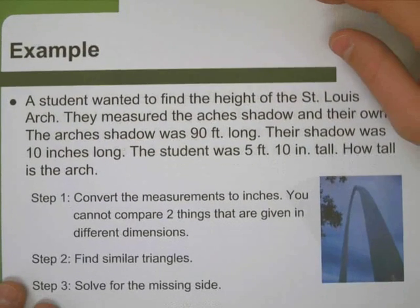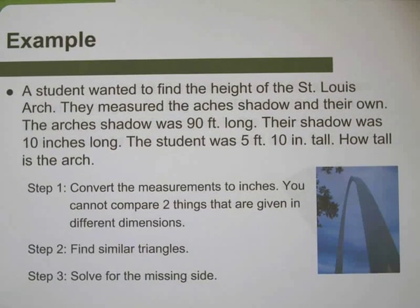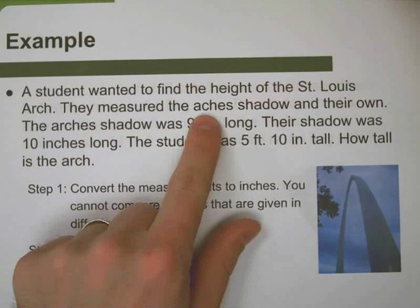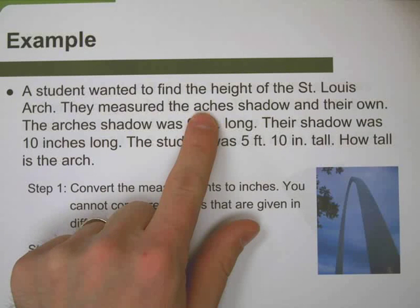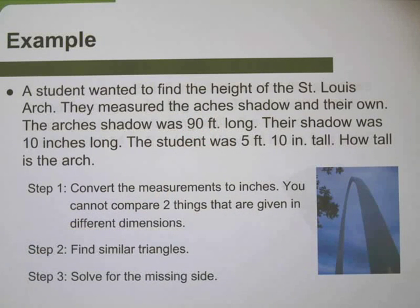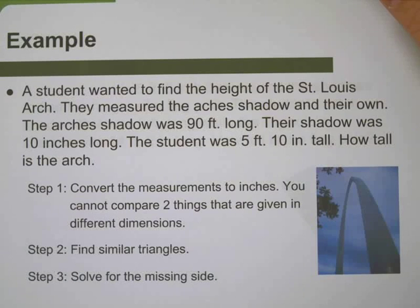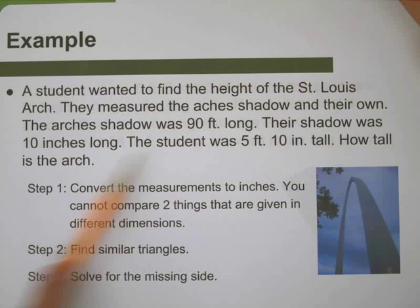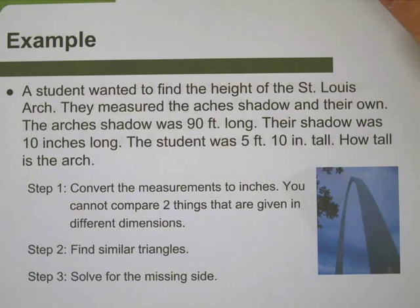Here's an example. A student wants to find the height of the St. Louis arch. They measure the arch's shadow and they measure their own shadow. The arch's shadow is 90 feet long and their shadow is 10 inches long. The student is 5 foot 10. How tall is the arch? Well, first things first - you've got to convert everything to the same type of measurement. You don't want to work with feet and inches at the same time because that's just going to mess us up. So we need to convert everything, either all to feet or all to inches.